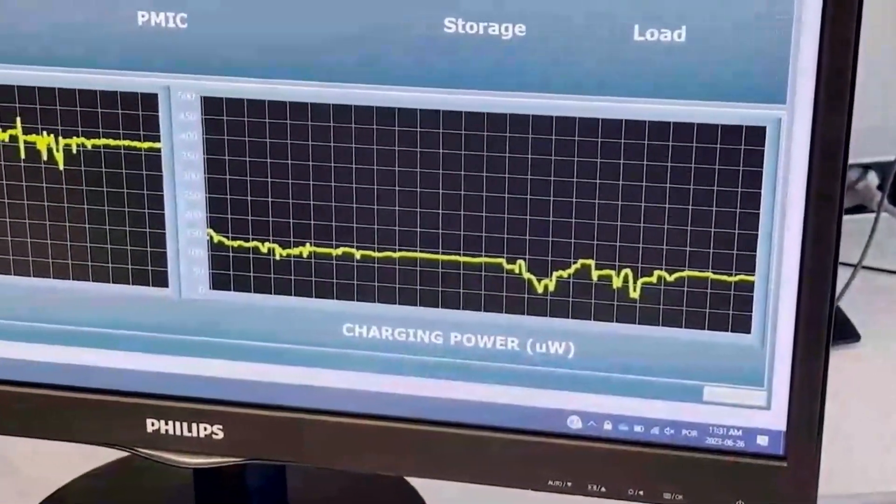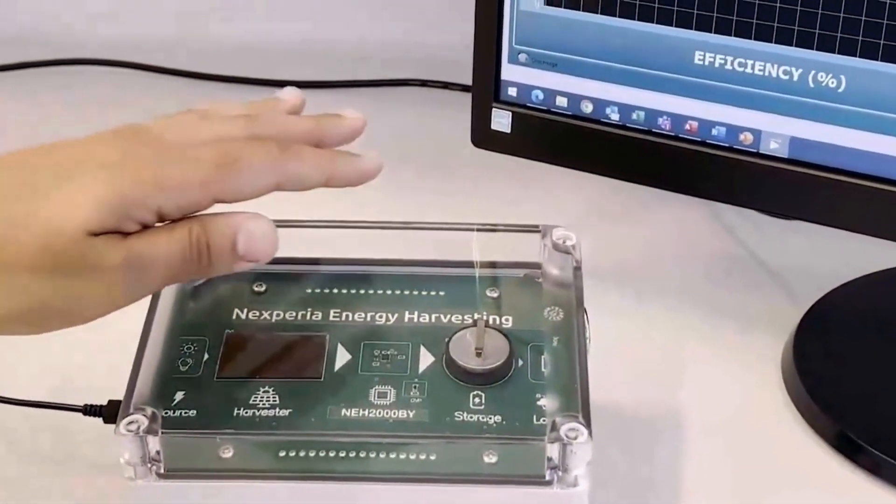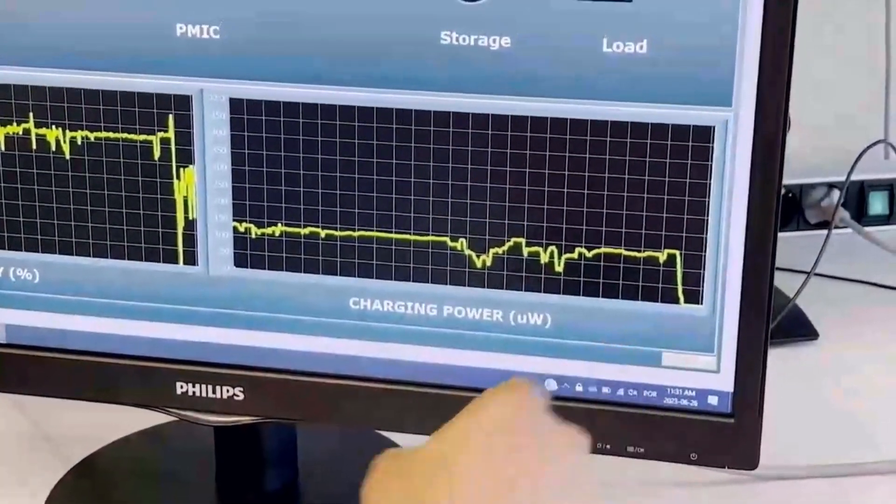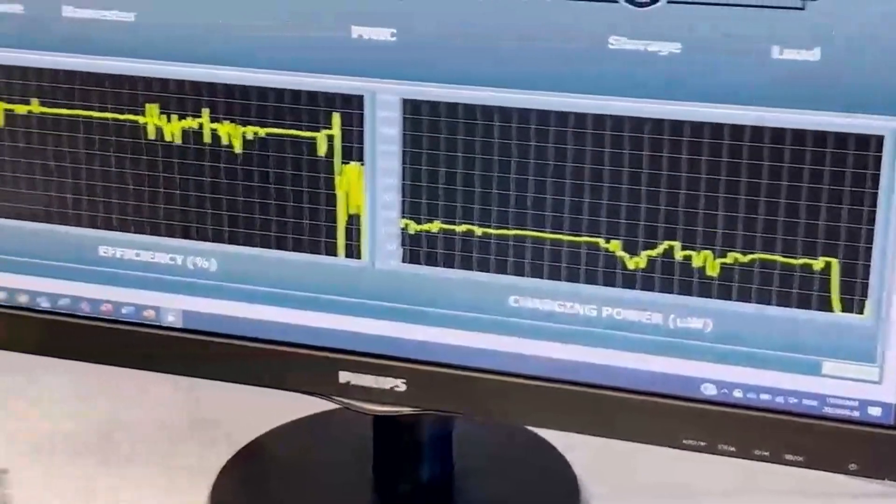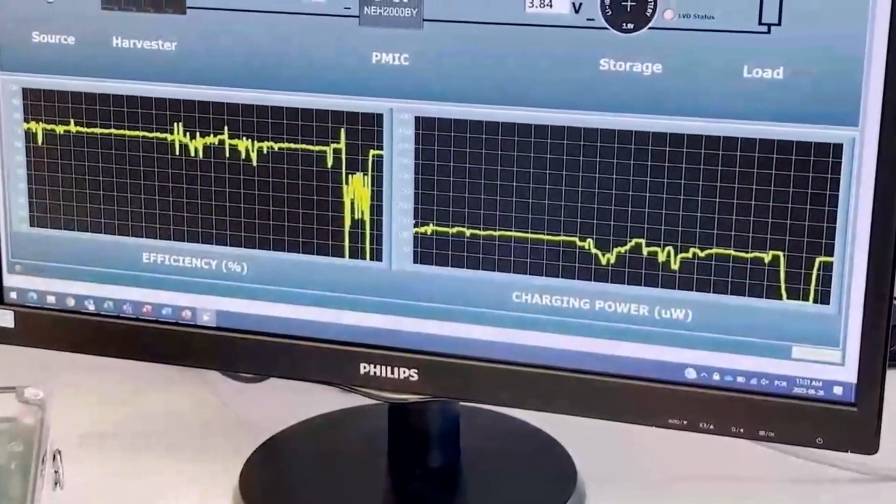The nice thing about this box is because it's fully dynamic. If I hover my hand over the PV we can see that the charging power goes to zero. And at the same time, of course if I remove my hand the power goes back again.